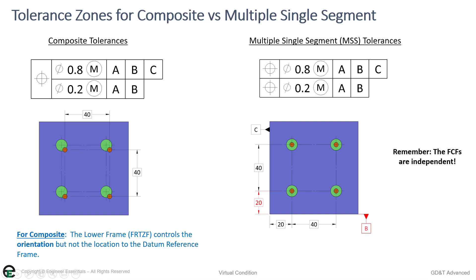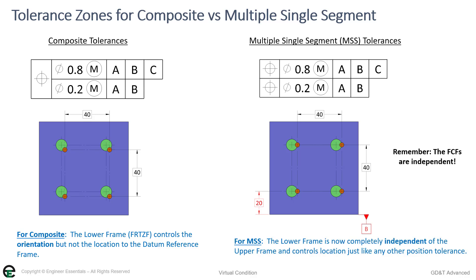But the red one now on the bottom, take a look at what happens with the multiple single segment. So it shifted straight over to the left. So if you didn't see that, it went straight to the left, straight over to the right. So it's going back and forth there. But notice, because we have B in that bottom frame also, and we said that it's also controlling location.